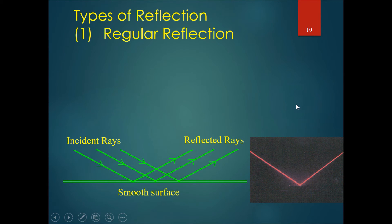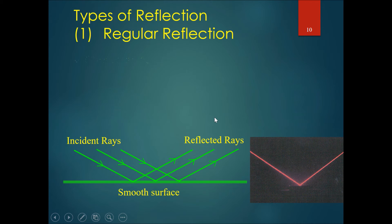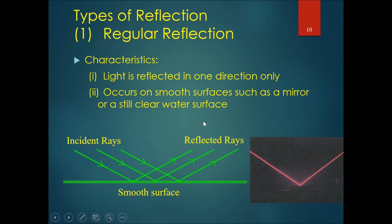The first type of reflection is called regular reflection, which is what you see in a mirror. When incident rays come in parallel, they also reflect out parallel. Light is reflected in one direction only — for example, a laser pointer shines in and reflects out as a clean straight line. This occurs on smooth surfaces such as a mirror or a very still, clear water surface.